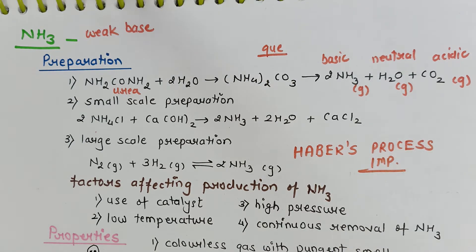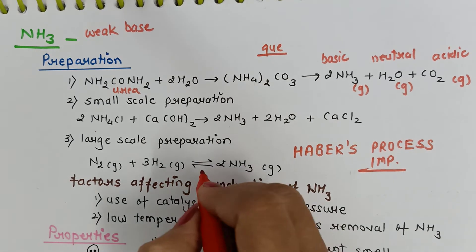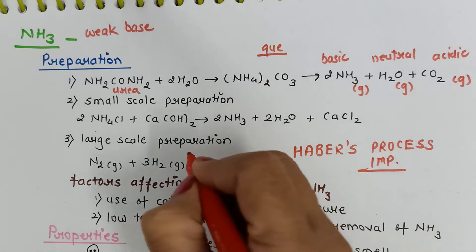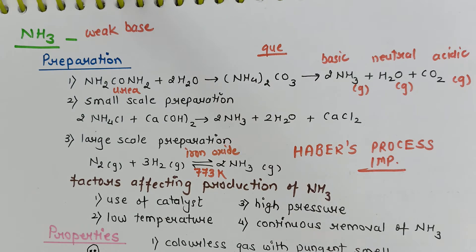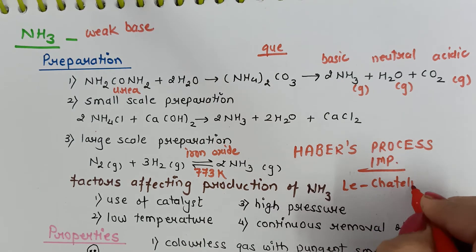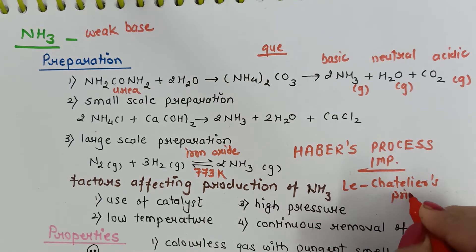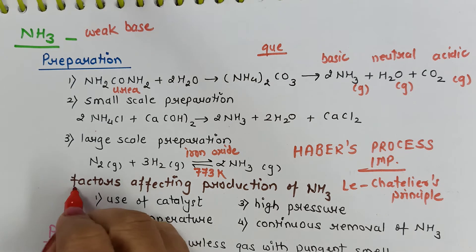In Haber's process, nitrogen is treated with hydrogen to give ammonia. The reaction is carried out at 773 K in the presence of a catalyst such as iron oxide. Using Le Chatelier's principle, we have to ensure that the reaction always proceeds in the forward direction.